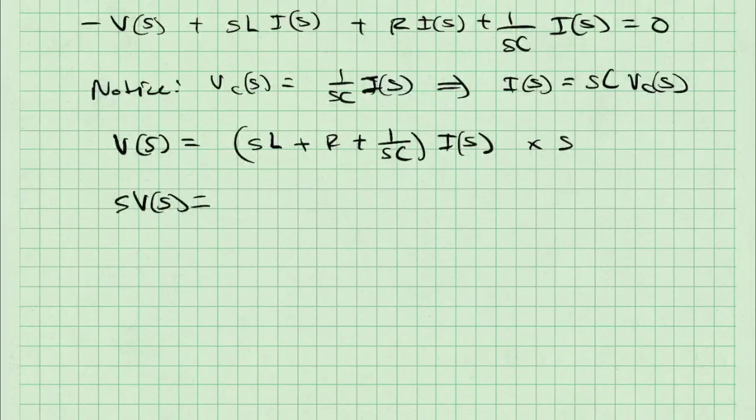This gives me S V of S is equal to, in parentheses, S squared L plus R S plus 1 over C, multiplied by I of S.